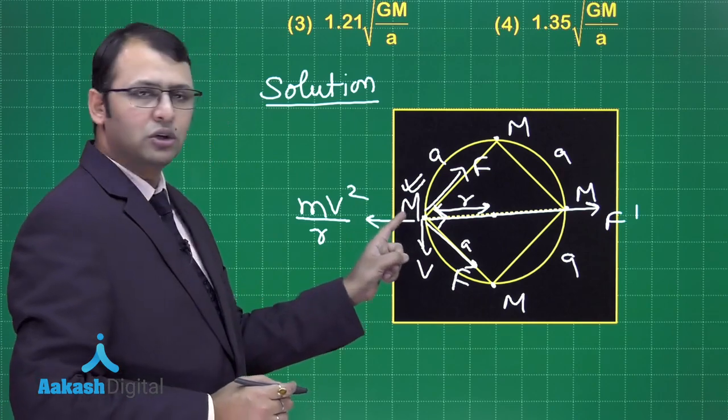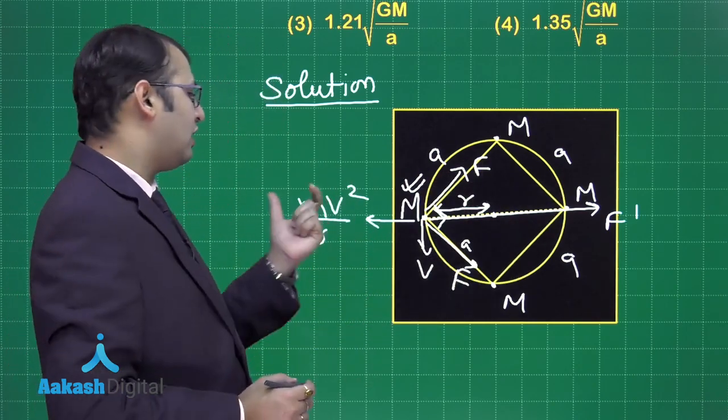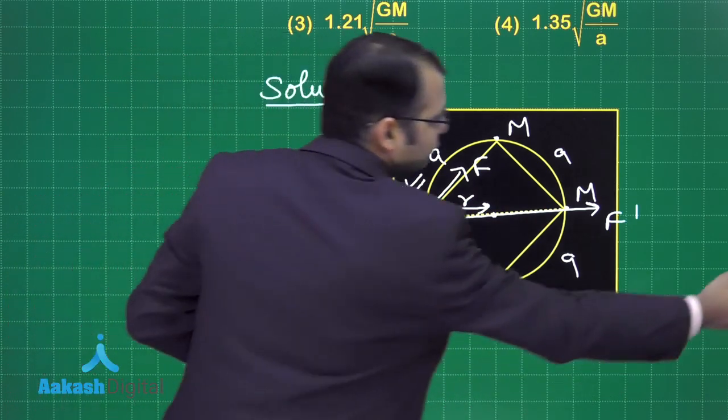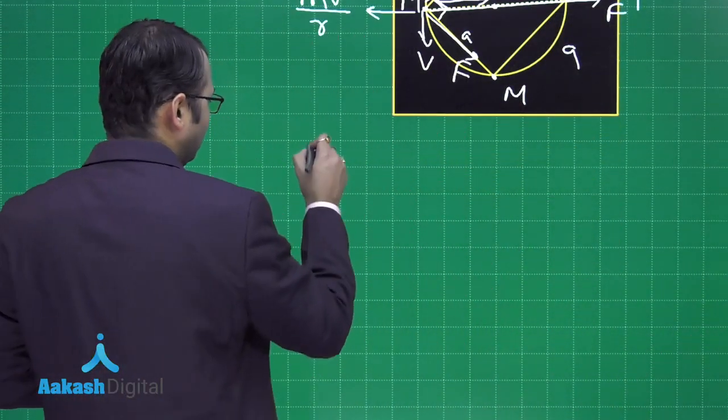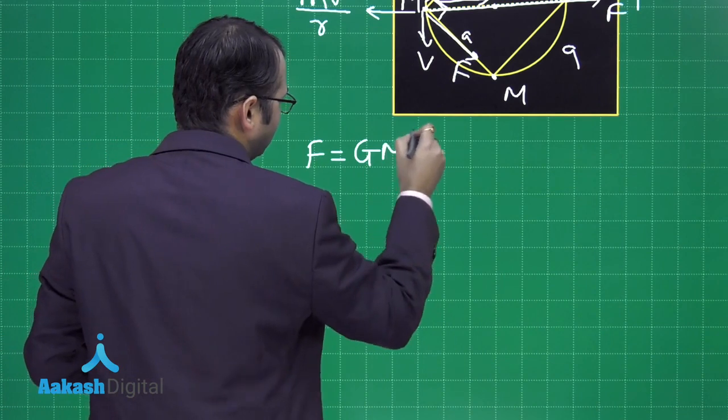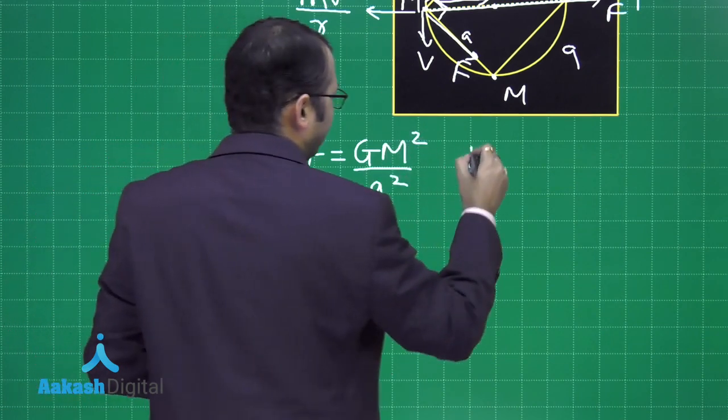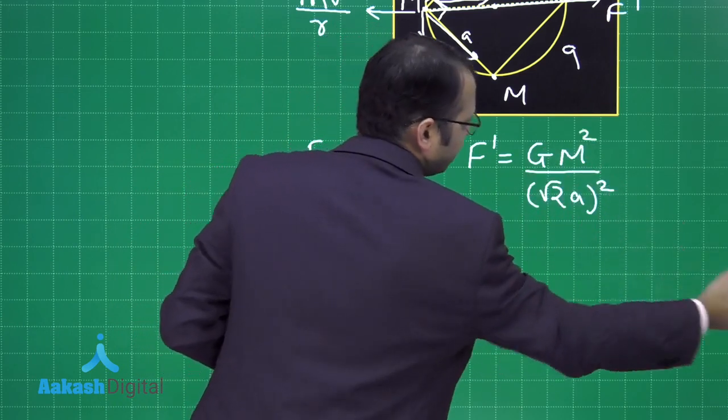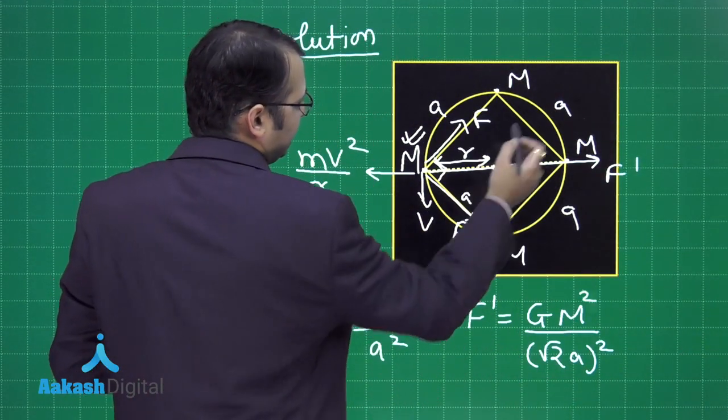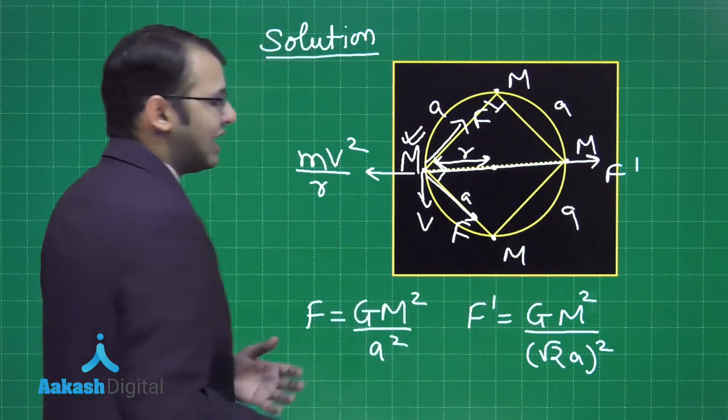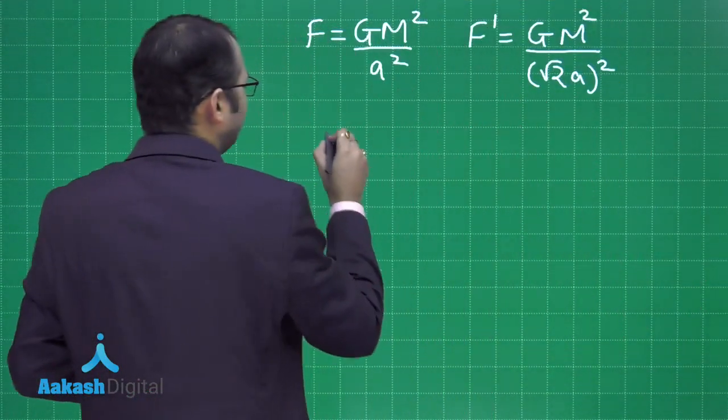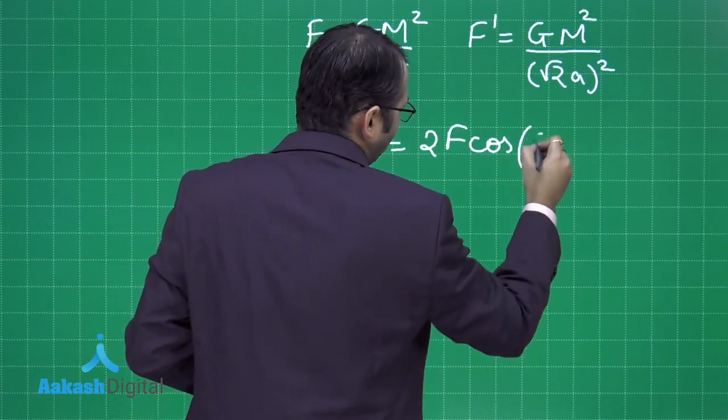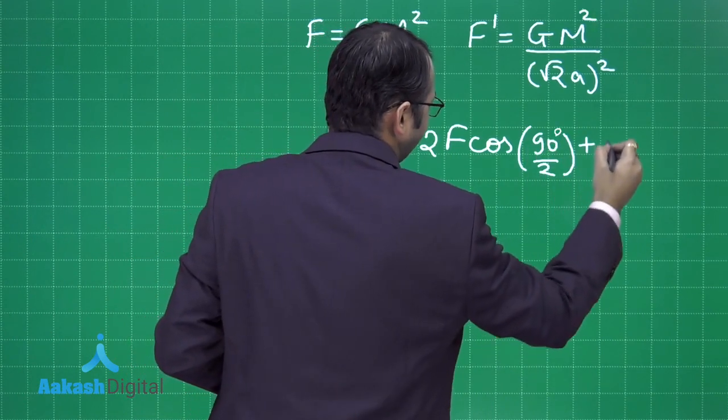The idea would be that if it is revolving with some velocity V, it will have a centrifugal force Mv square by R. So now whatever net force is acting on this mass in this direction will be equal to the value of Mv square upon R centrifugal force. Thus it remains balanced along this axis. So first of all, what is the net force acting on the mass?